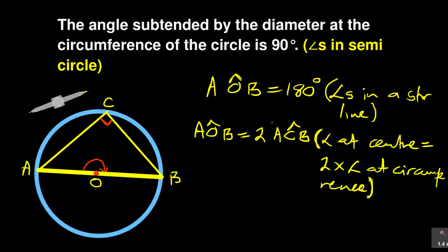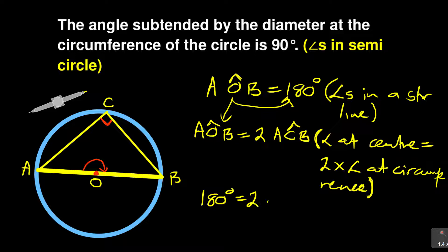So it says angle A, O, B is equal to two times angle A, C, B. But we know what angle A, O, B is — we just said angle A, O, B is equal to 180. So you can then say 180 degrees is equal to two times angle A, C, B.